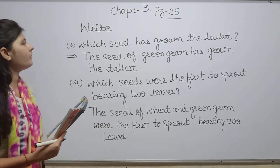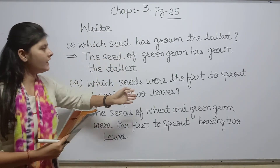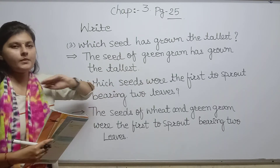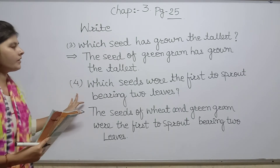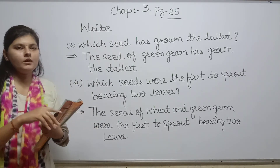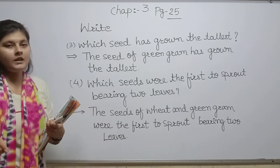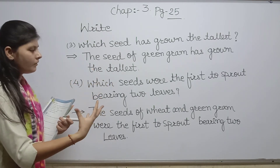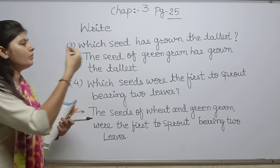Question number three: which seeds have grown the tallest? It is the green gram — when you observe it, the green gram has grown the tallest. And the next question is: which seeds were the first to sprout bearing two leaves? The answer is wheat and green gram — these are the first two to sprout and show leaves.